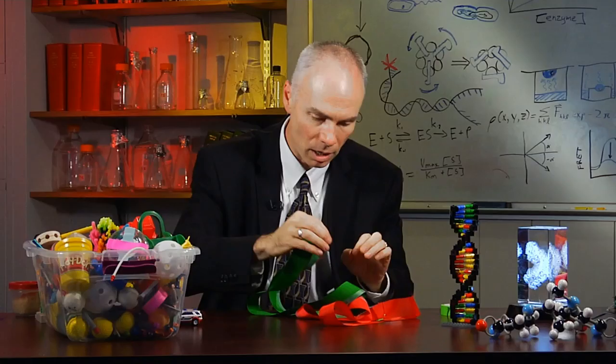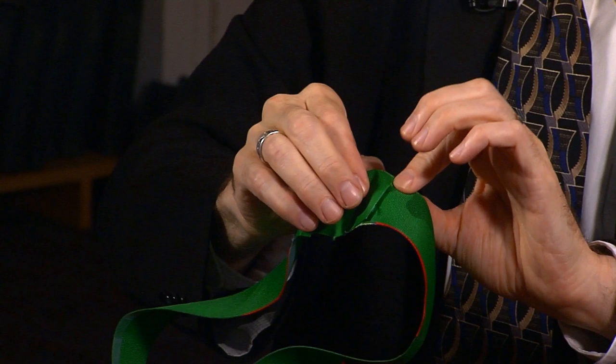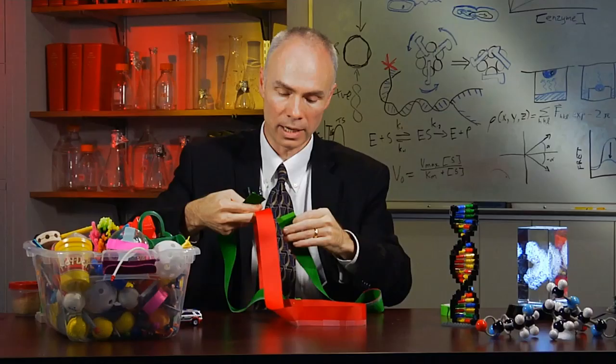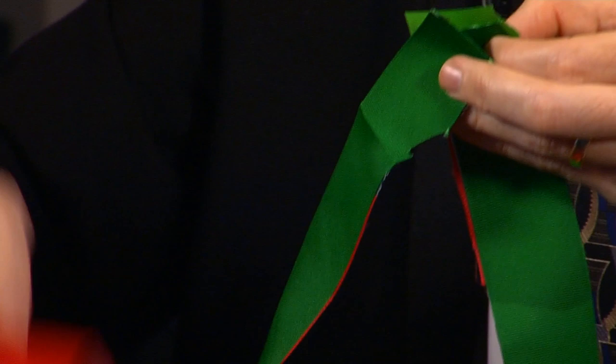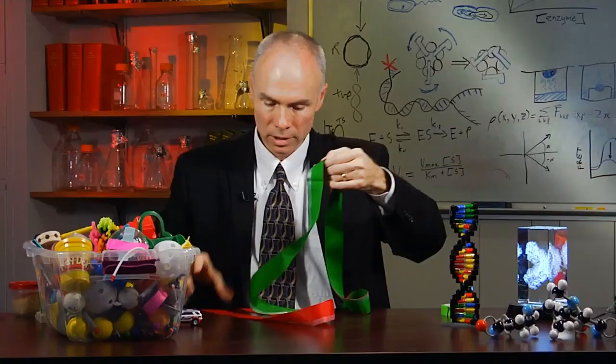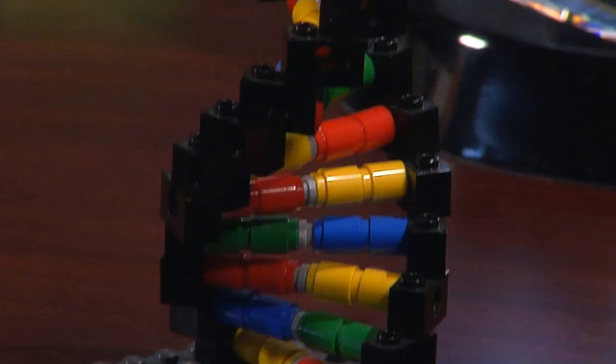The other kind of machine, though, that we've worked on actually comes in and unties this knot. And so what this machine does literally is it makes a crack in the DNA. It passes a second DNA strand through that crack, and then it reseals it. And at the end of this, you have two separated DNAs.